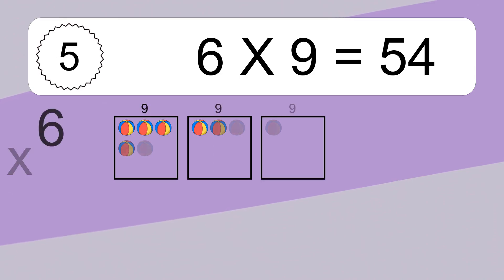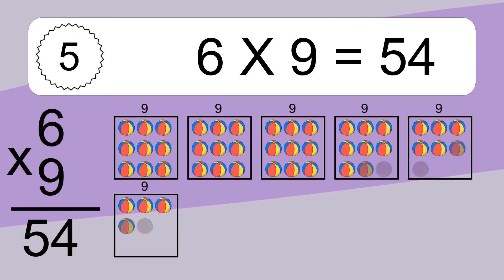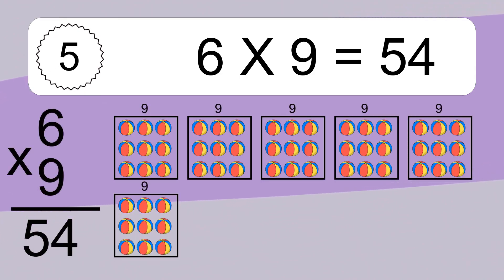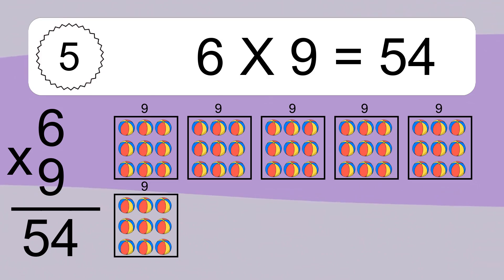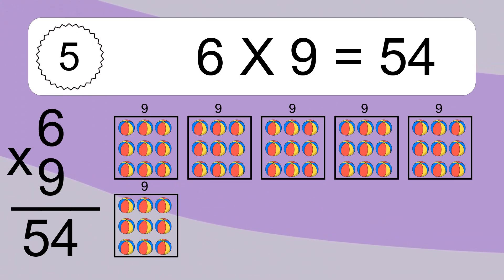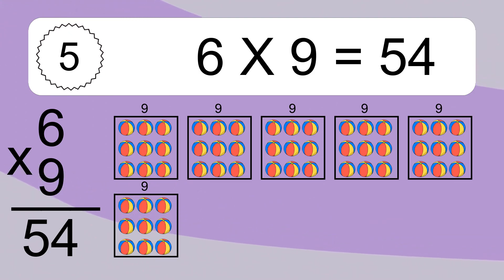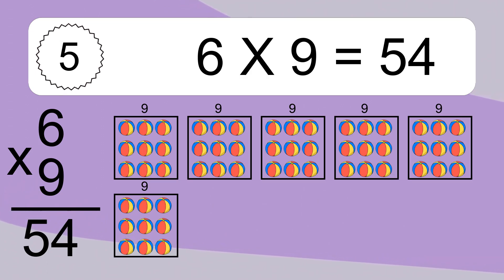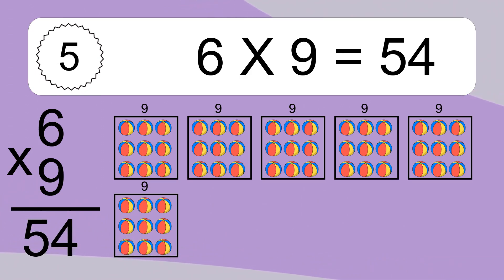6 times 9 equals what? 6 times 9 equals 54. If you count all the balls in all the boxes together, you will have 6 times 9 balls. This equals 54 balls.